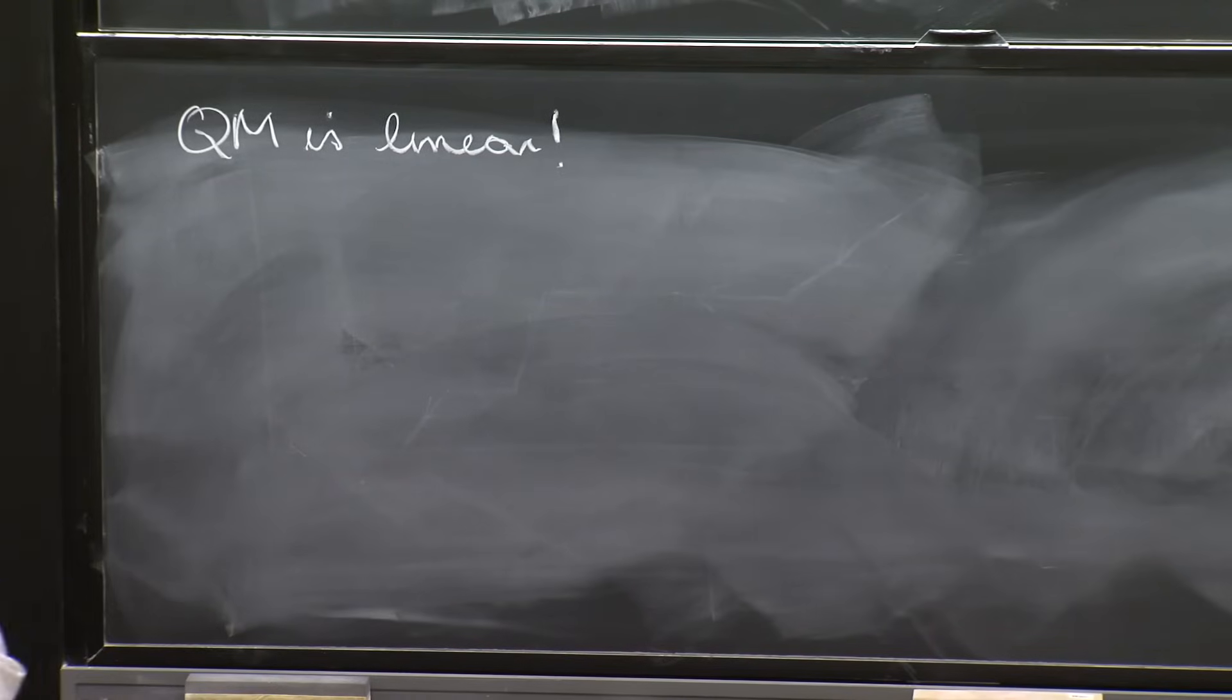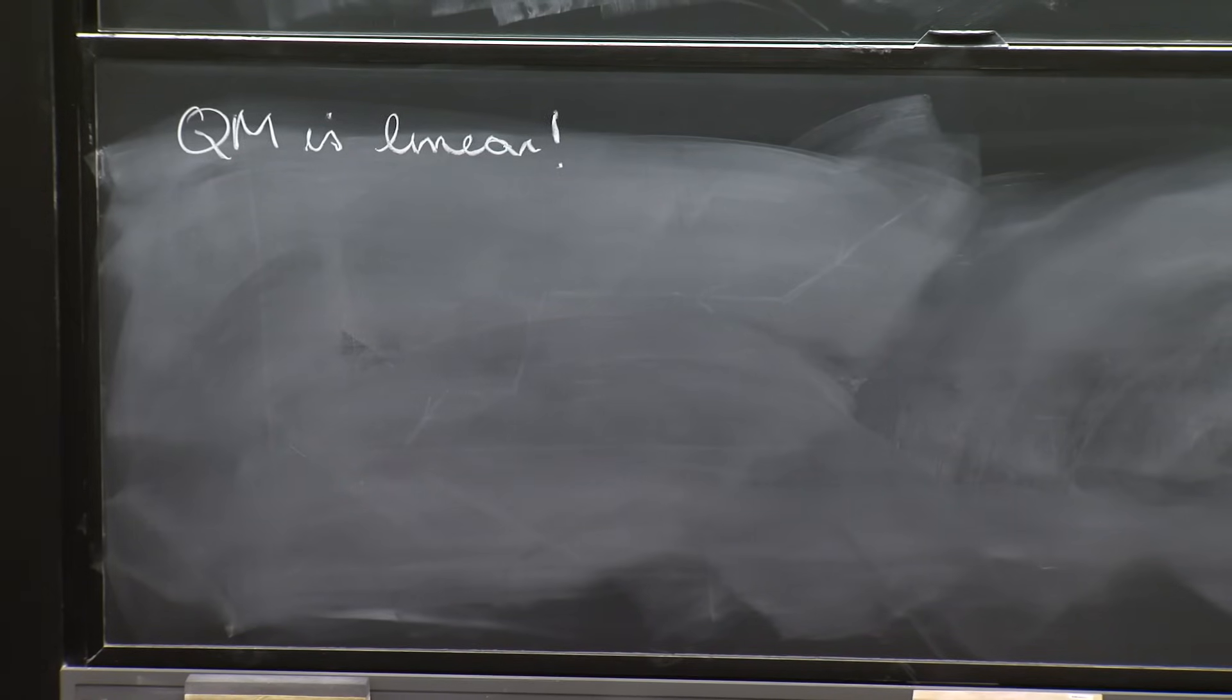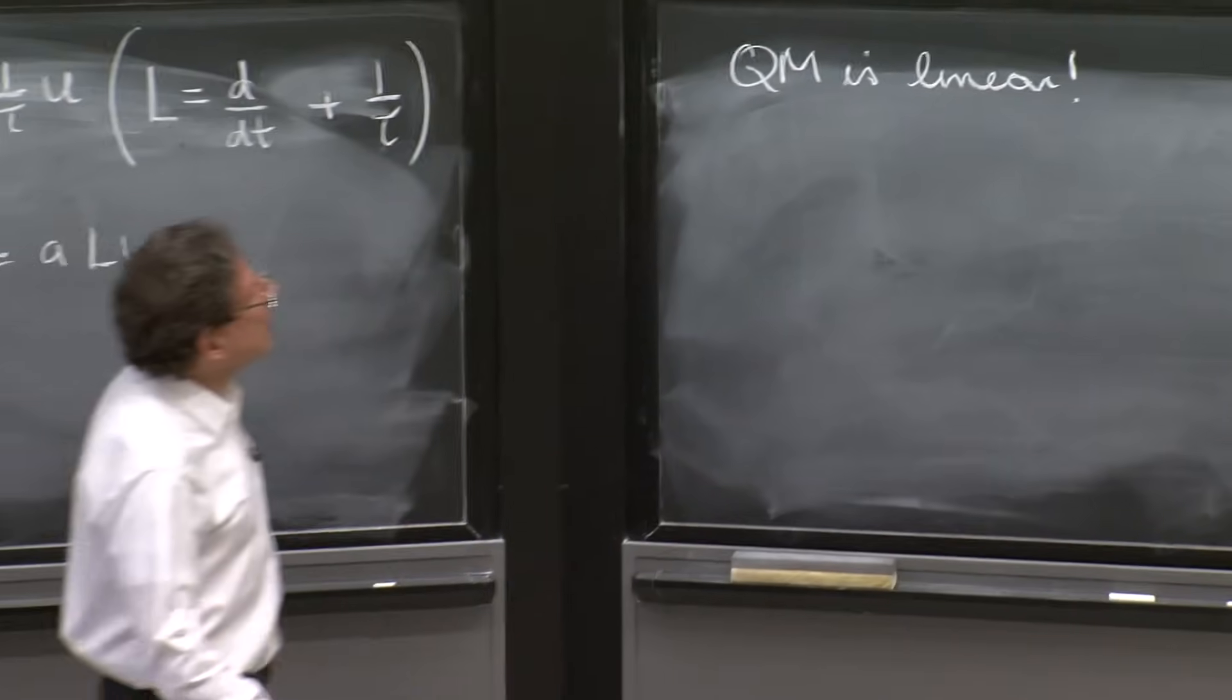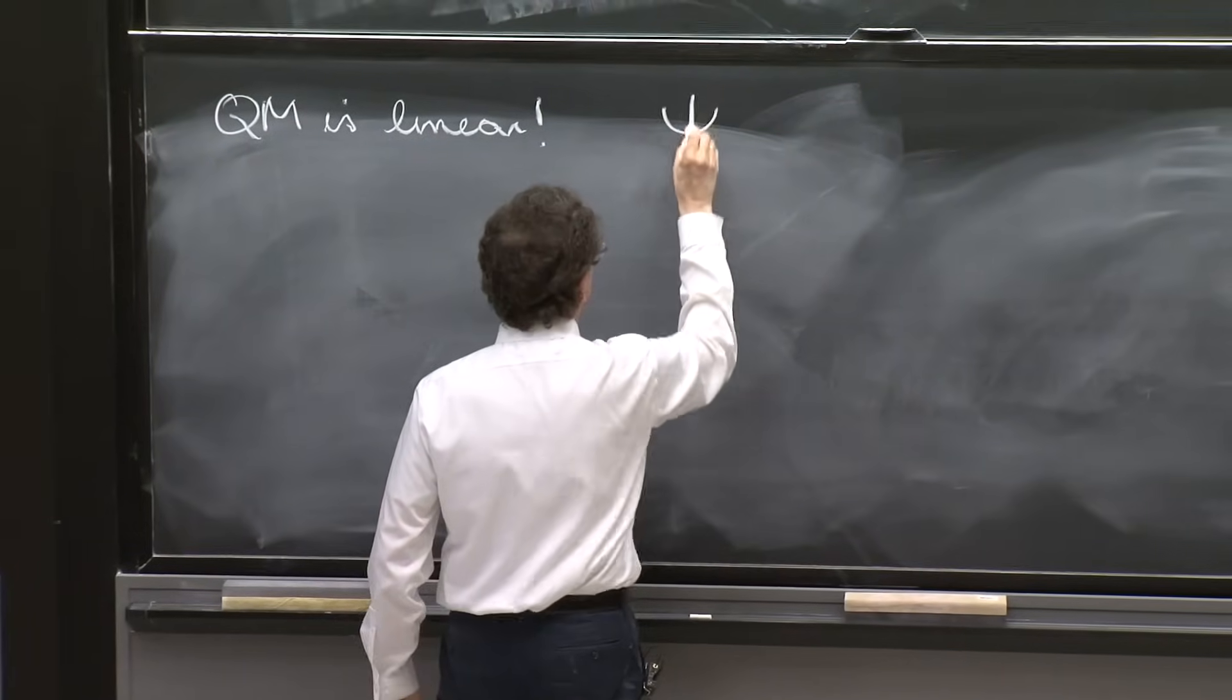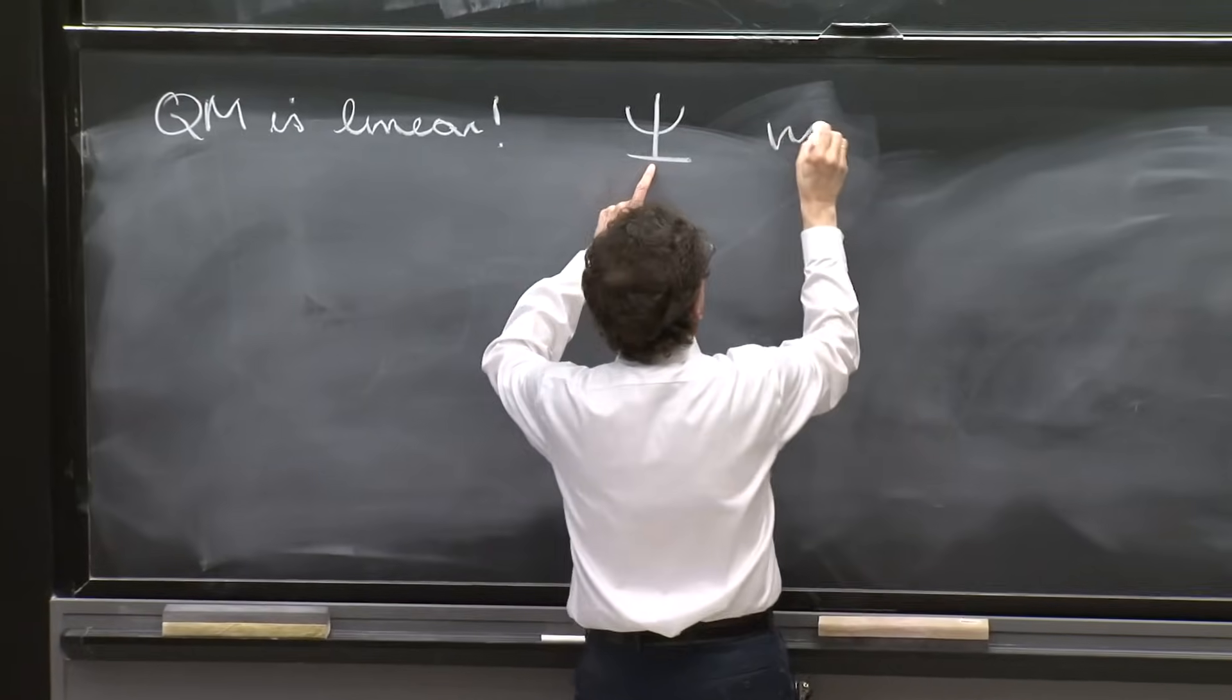First, you need an equation. And whose equation is it? Schrodinger's equation, 1925. He writes an equation for the dynamical variable. And the dynamical variable is something called the wave function.